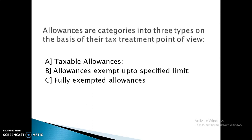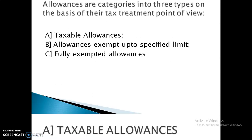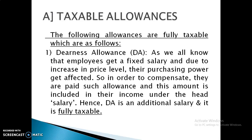Allowances are categorized into three types on the basis of their tax treatment. Number 1: taxable allowances. Number 2: allowances exempt up to a specified limit. Number 3: fully exempted allowances. In this video we will discuss only fully taxable allowances.